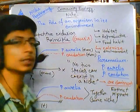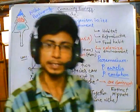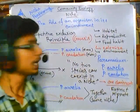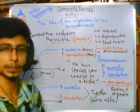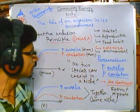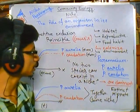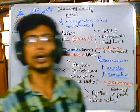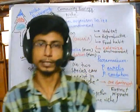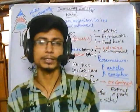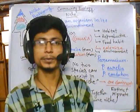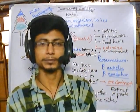This is the competitive exclusion principle, also called Gauss's principle. Remember this concept — it is a very important topic for CSIR NET questions. I hope it will help you. Thank you.